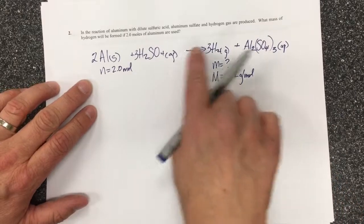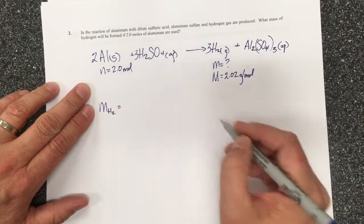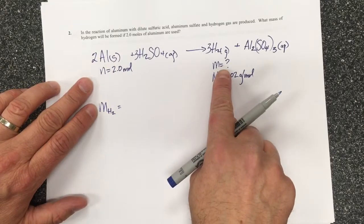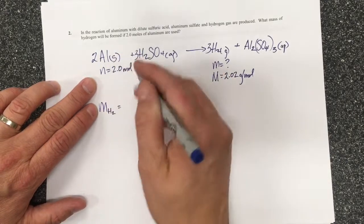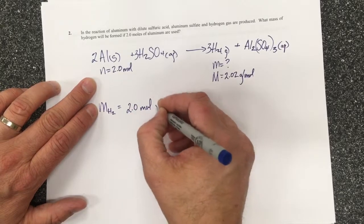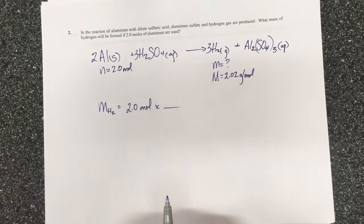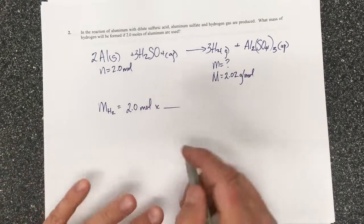Here it's asking me to find the mass of hydrogen gas and so that's what I want to end up with. I was told that I have 2.0 moles of aluminum. So in the previous example we had to calculate the mole of one chemical, this time they've given it to me.